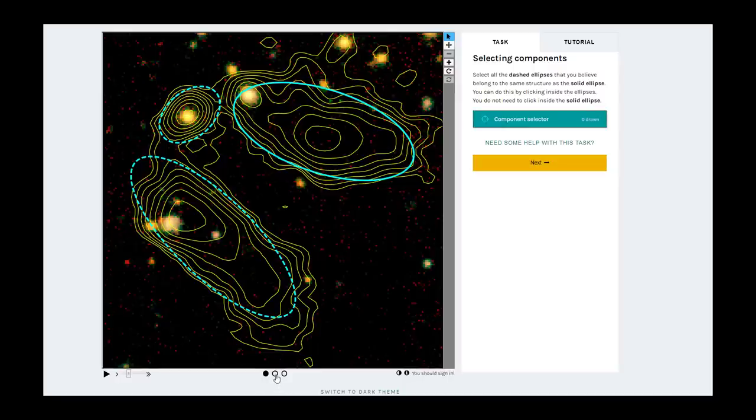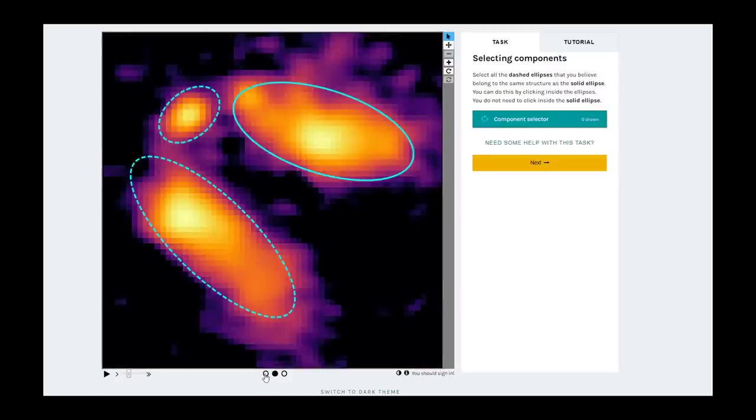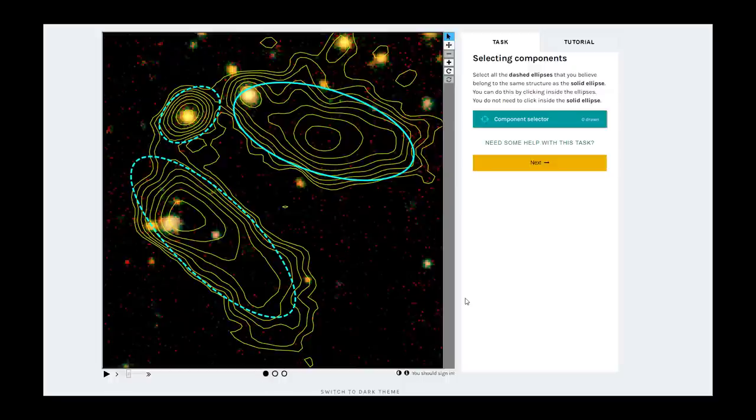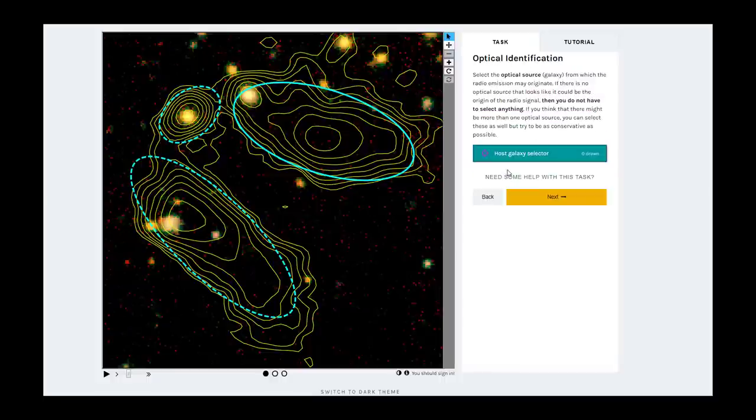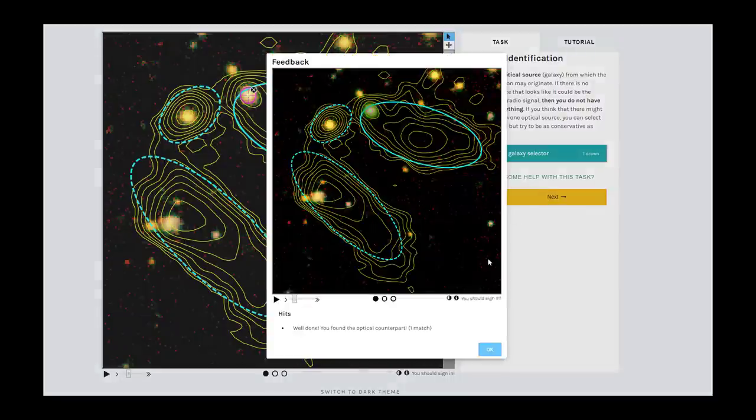This source is an example of a complex case. At first glance, it seems like a single radio source with two jets, but upon looking at the optical image, it seems that each blue ellipse has its own optical counterpart. Therefore, most likely, this is actually three separate radio sources that just happen to be close together. We, therefore, don't want to associate the components. The optical counterpart of the solid blue ellipse is behind the compact contour here.